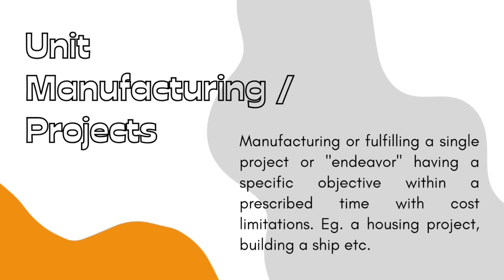The fourth type is unit manufacturing or projects. Think of designer clothes or wedding wear — you go to a designer and say you want a wedding saree with your faces woven into it, or you want to build your house or a ship, or get a birthday cake with specific toppings and flavors where one layer is vanilla, the next chocolate, and the third red velvet. Such things are unit manufactured — produced just for you. Unit manufacturing means manufacturing or fulfilling a single project or endeavor having a specific objective within a prescribed time with cost limitation.